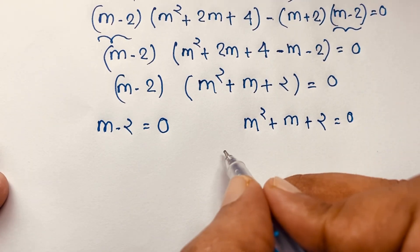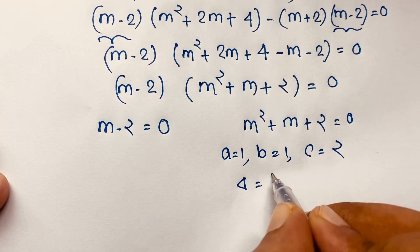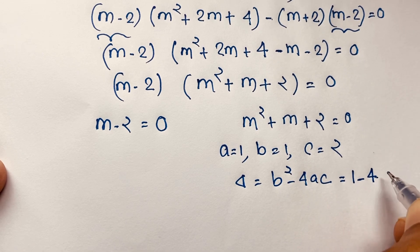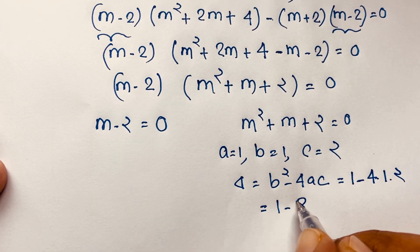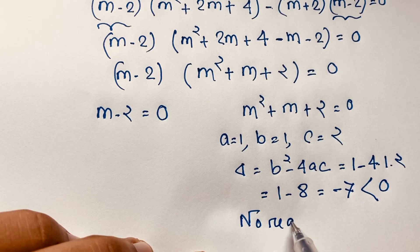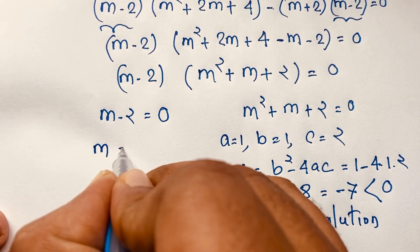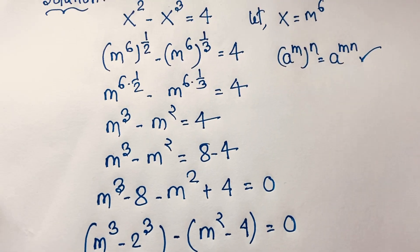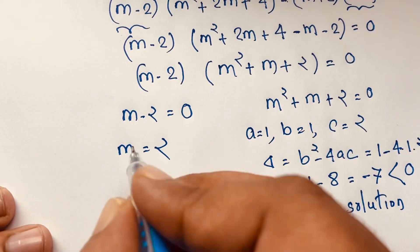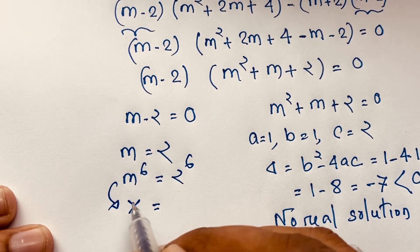For the quadratic case m squared plus m plus 2 equals 0, we have a equals 1, b equals 1, and c equals 2. The discriminant delta equals b squared minus 4ac equals 1 minus 4 times 1 times 2 equals 1 minus 8 equals negative 7. Since delta is less than 0, this gives complex numbers — no real solution. For the first case, m minus 2 equals 0, so m equals 2. Remember we let x equal m to the power 6, so raising both sides to the power 6 gives m to the power 6 equals 2 to the power 6, meaning x equals 2 to the power 6 equals 64.